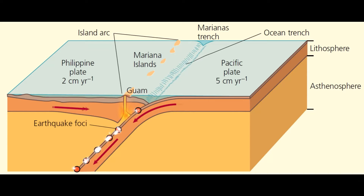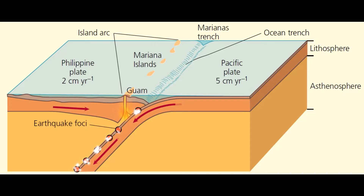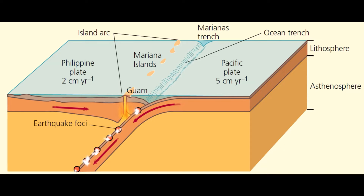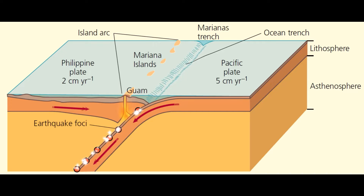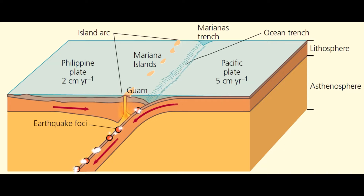When two oceanic plates converge, subduction occurs, as one plate is likely to be slightly older, colder, or denser than the other. This plate is subducted, heated, and eventually melts under pressure at around 100 km below the surface.